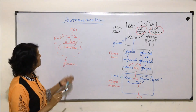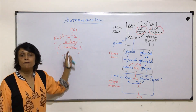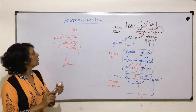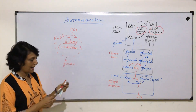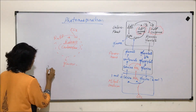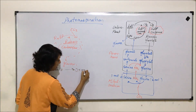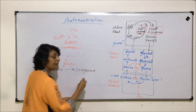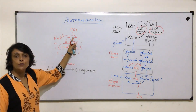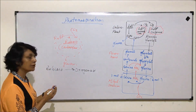Now when we were talking about this Rubisco, we said that its behavior changes when the conditions change. What are those conditions when Rubisco starts to behave in a different manner? Rubisco acts as oxygenase instead of carboxylase. Carboxylase meant addition of carbon dioxide, and oxygenase activity would be addition of oxygen.